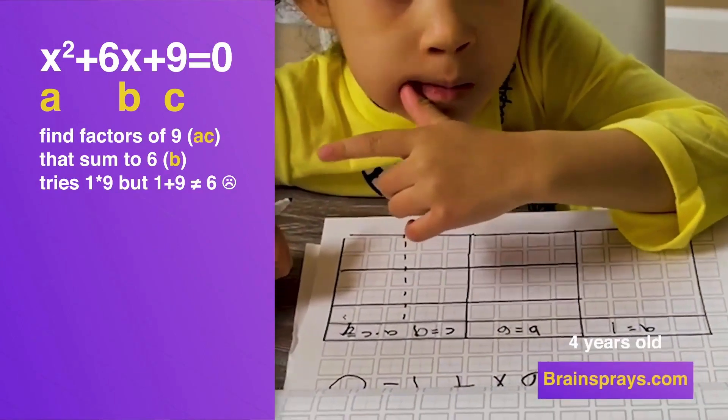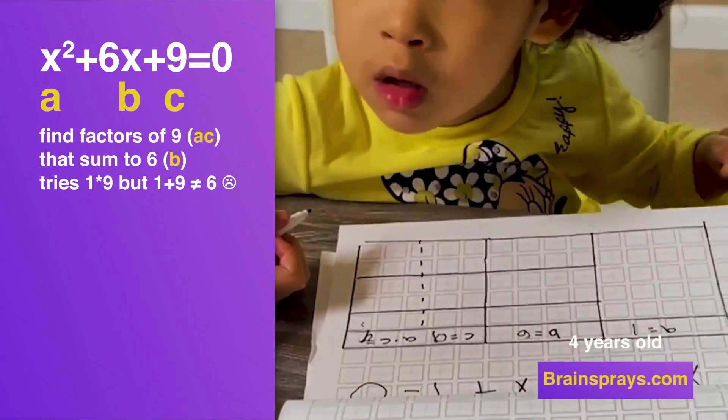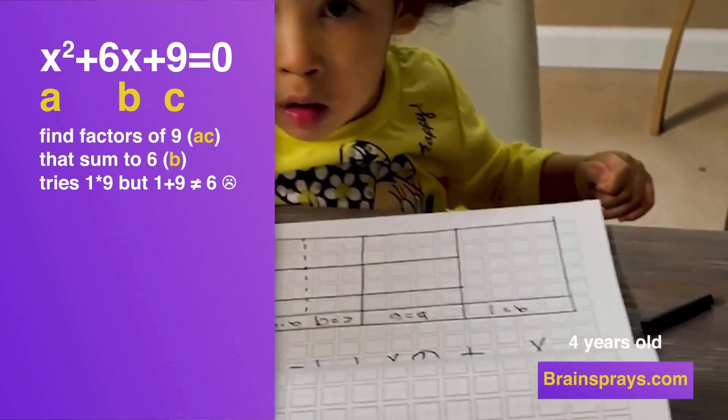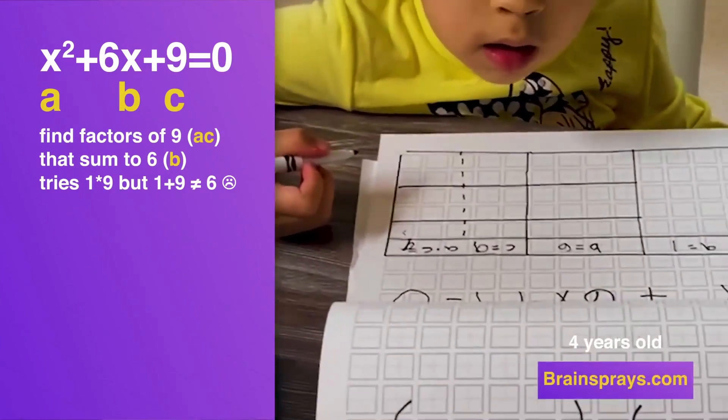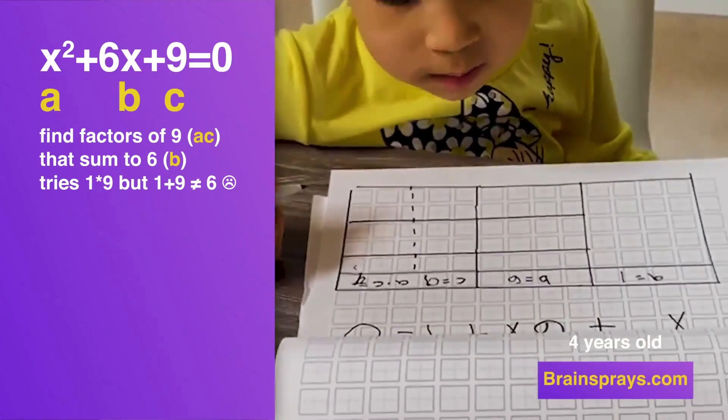Try that one. Try 1 times 9. You said 1 times 9 and see if 1 plus 9 equals 6. But just write it down so you have a record of it. It doesn't. Okay. And go on to the next one. It is 10. Very good. So try another.